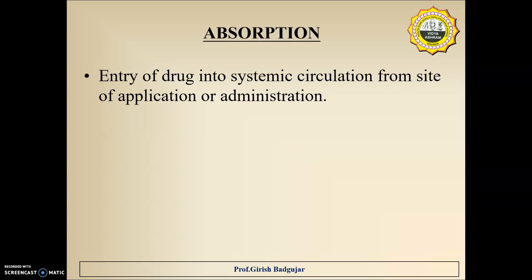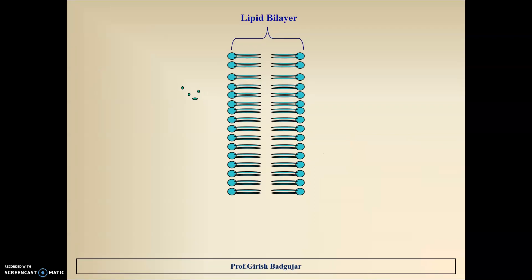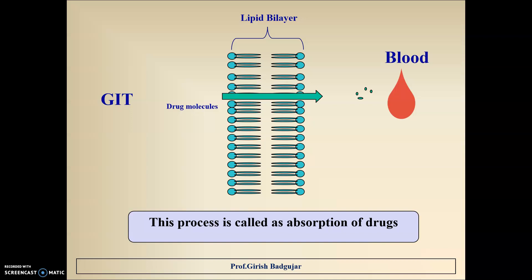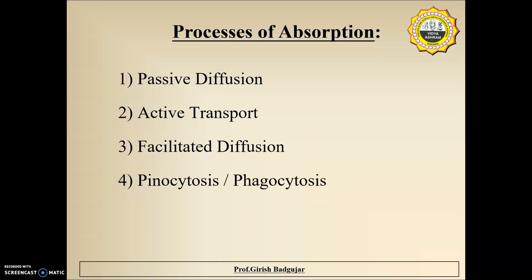What is absorption? It is the entry of drug molecules into the systemic circulation or blood from the site of application or administration. We know that the cell membrane is made up of a lipid bilayer, and drug molecules enter into blood circulation through this lipid bilayer. This process of transport of drug from the GIT or site of administration to the blood circulation is called absorption of drugs, and it can occur in many ways. These are called processes of absorption — the methods by which drugs can be transported from the GIT to blood. We can classify them into four types: passive diffusion, active transport, facilitated diffusion, and pinocytosis or phagocytosis.